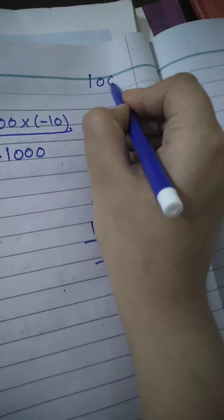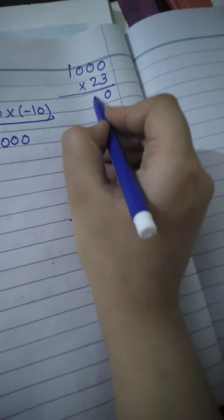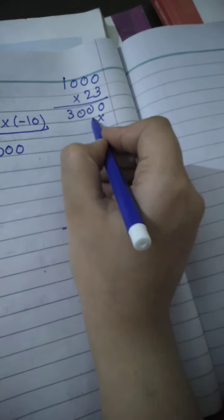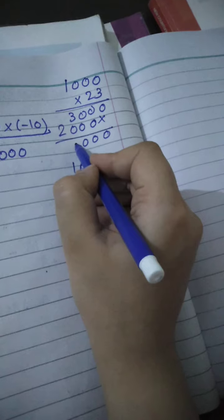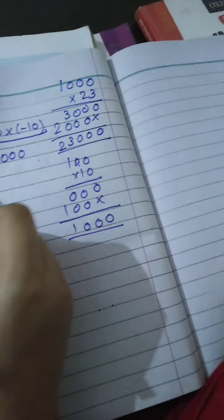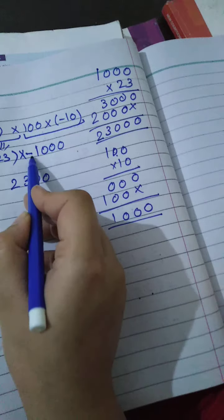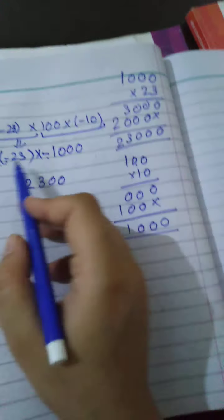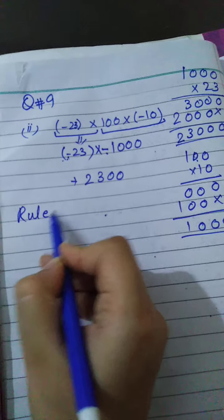In the rough work, multiply 23 with 1000. Writing the greater value above and smaller below: 23 times 1000 equals 23,000. For the signs: there is no sign given with 100 so it is assumed plus, and minus 10 has minus sign. In multiplication, plus times minus gives minus, so the sign with the answer is minus.